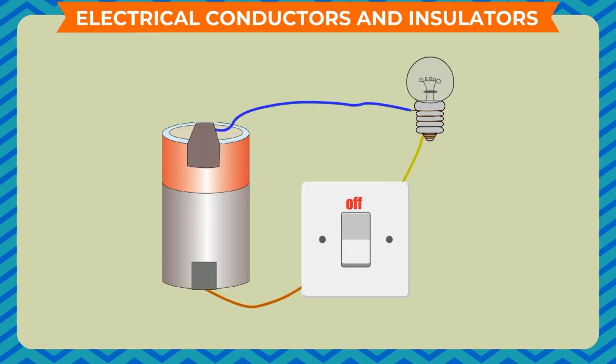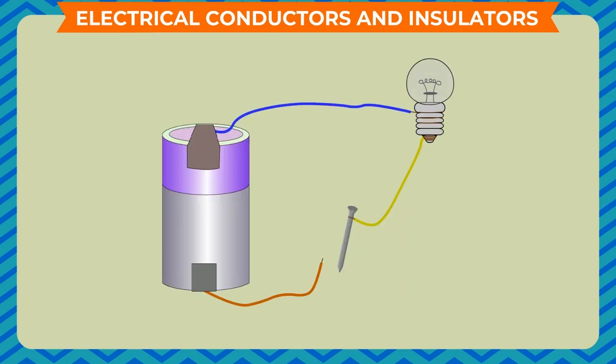Take the electric circuit in which the electric bulb, switch, and electric cell are connected with a metal wire. Now replace the switch with an iron nail. Now connect the second wire to the other end of the iron nail. You see the bulb lights up. That means the iron nail allows the current to flow through it.